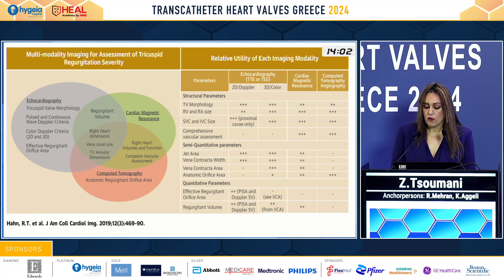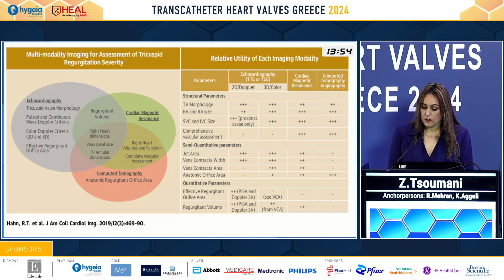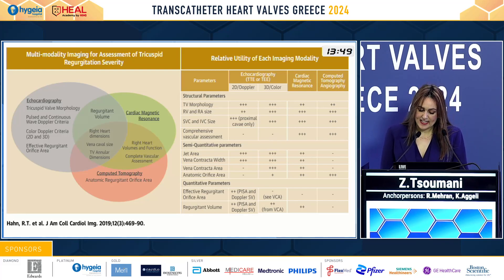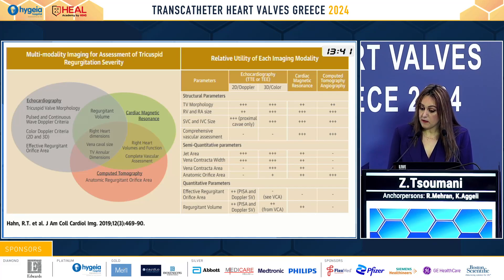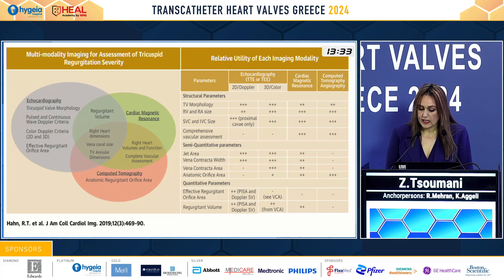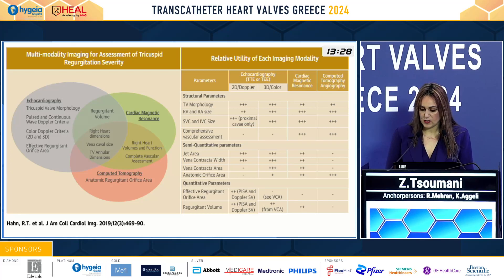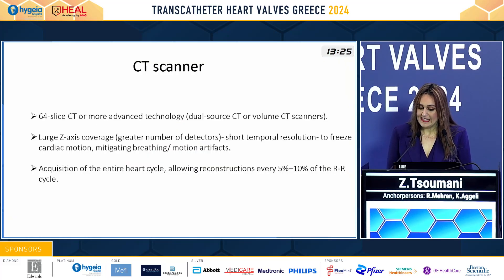Cardiac CT is one of the pillars of the multimodality assessment of the tricuspid valve. It can study the tricuspid valve morphology, measure the right heart, SVC, and IVC, and allow a more comprehensive vascular and venous assessment. By calculating the anatomic orifice area, we can have semi-quantitative parameters of the tricuspid valve severity.